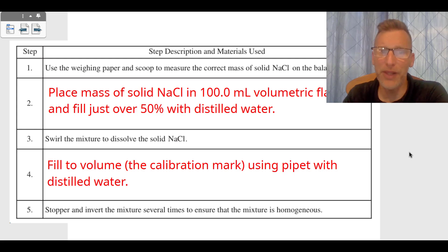We're going to place that mass of that solid NaCl in the 100.0 milliliter volumetric flask. Volumetric flask has one job in life - that's to fill to 100.0 milliliters. We fill with just over about 50% distilled water in order to dissolve it.